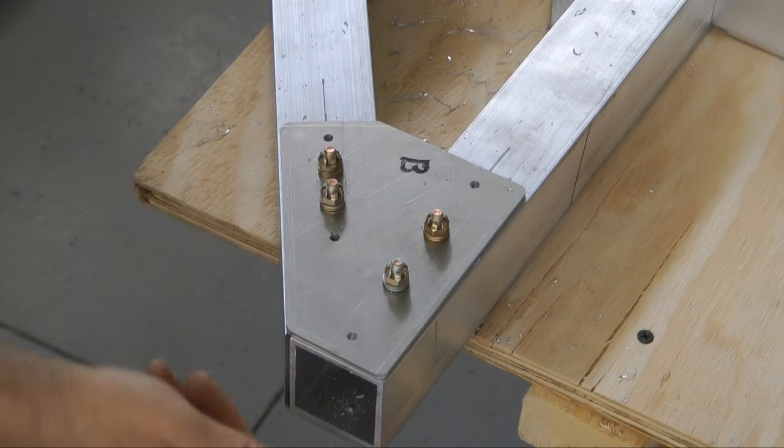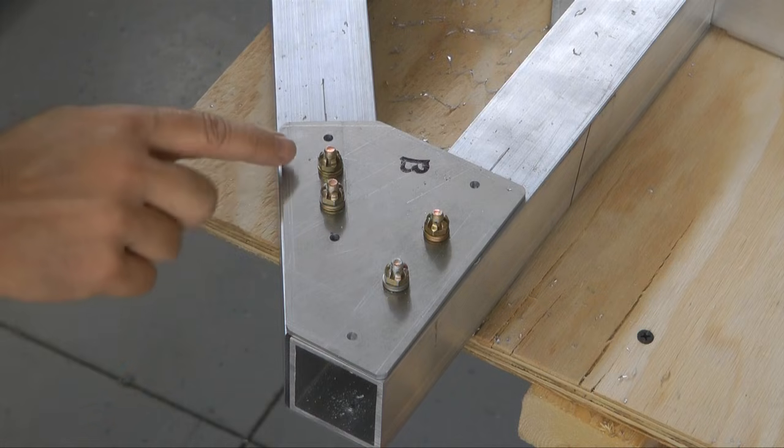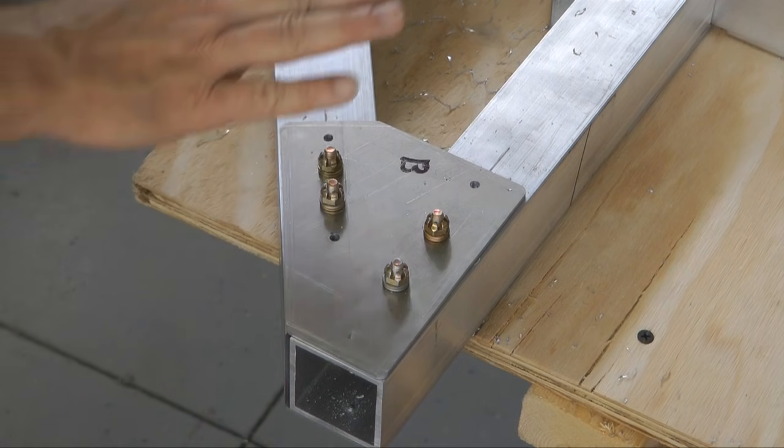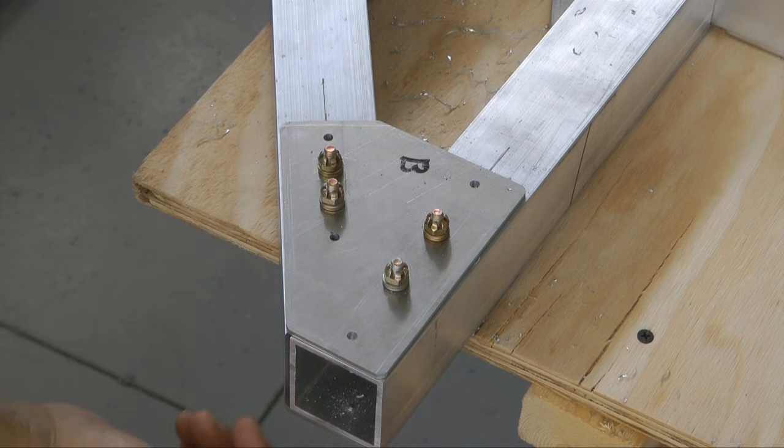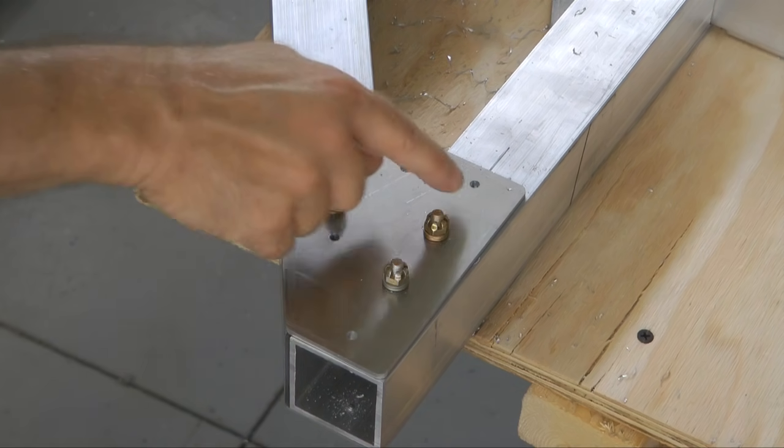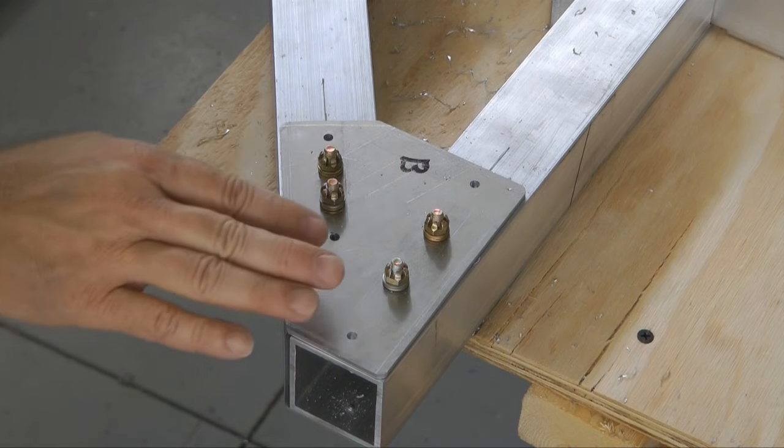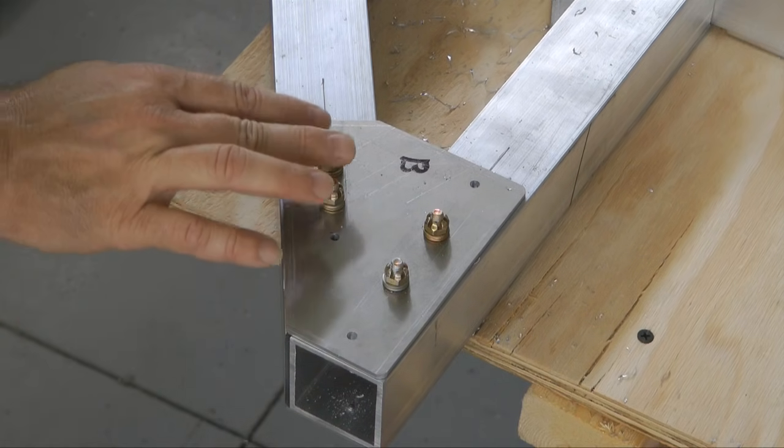Our final step on this gusset is to drill the remaining holes out to 3/16ths. These are the ones that have rivets on the back side so that when we end up flipping the entire fuselage over, we can remove the rivets and drill through to finish off with another four bolts.